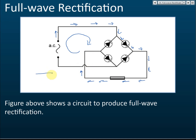In a circuit diagram, if wires are drawn meeting at a point, it means they are all connected. But if a small curve is drawn at the crossing, it indicates that one wire just passes over the other and they are not connected. So the current cannot go through that crossing.